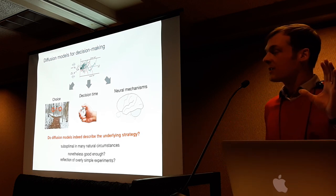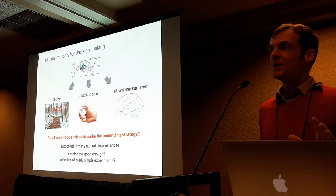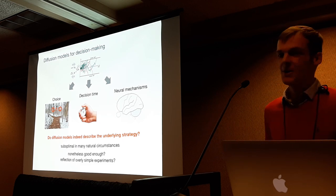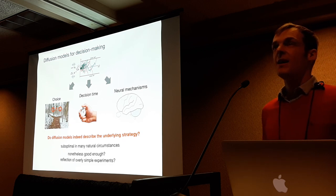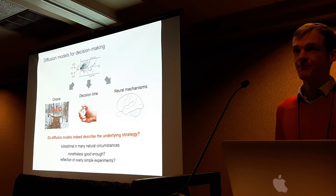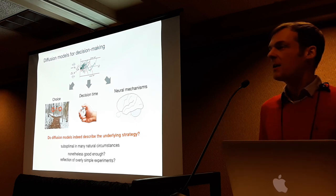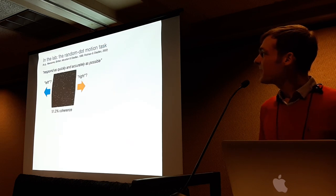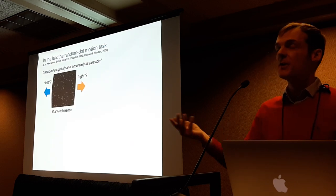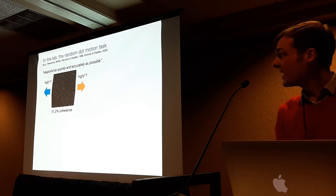The reason I get to this question is that under many natural circumstances diffusion models are actually suboptimal, which poses the question: are they nonetheless good enough that this is the strategy animals and humans are using, or are we looking at overly simple experiments where more complex strategies actually look like diffusion models? If anything's unclear, please ask immediately — I want to make sure we're all on the same page. In the lab, such decisions are tested with more restricted setups, and a very popular one is the random dot motion task that many of you might know.